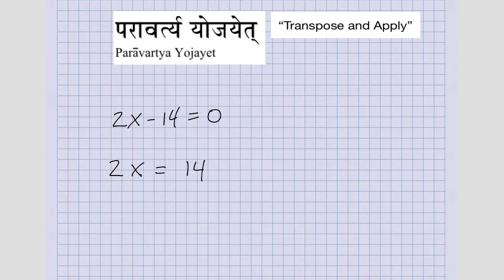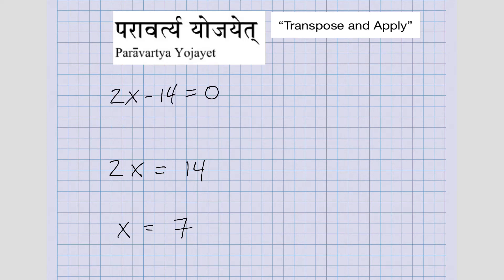I'm simply not showing you those intermediate steps. The next step is I need to divide both sides by two, so that leaves me X equals seven. That's kind of this idea of transpose and apply.